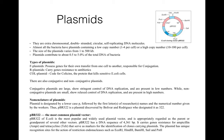There are types of plasmids. First is F plasmid, which possesses genes for its own transfer from one cell to another and is responsible for conjugation. Then R plasmid, which carries genes for resistance to antibiotics. Then Col plasmid, which codes for colicin — a protein that kills sensitive E. coli cells. There are also conjugative plasmids, which are large, show stringent control of DNA replication, and are present in low numbers; and non-conjugative plasmids, which are small, show relaxed control of DNA replication, and are present in high numbers.